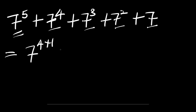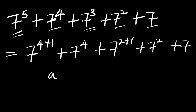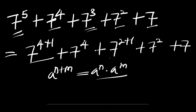Then we have plus 7 power 4, then we have plus 7 power 2 plus 1, we have plus 7 power 2, then we have plus 7. Now the next thing we are going to do is to consider this identity: if you have a power m plus n, this equals a power n times a power m. So we apply this identity right here and here.